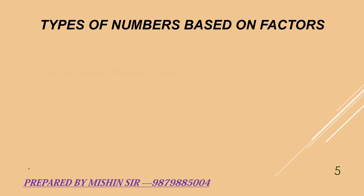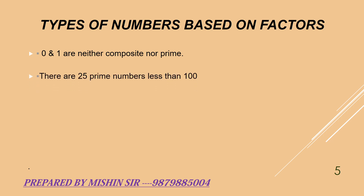Note that 0 and 1 are neither composite nor prime numbers. There are 25 prime numbers less than 100.